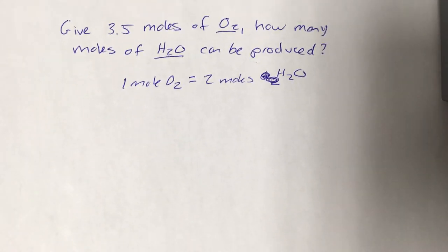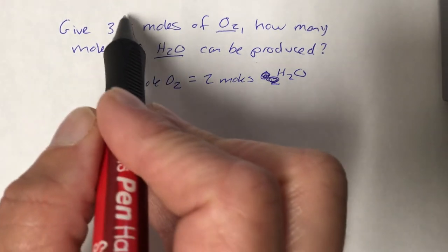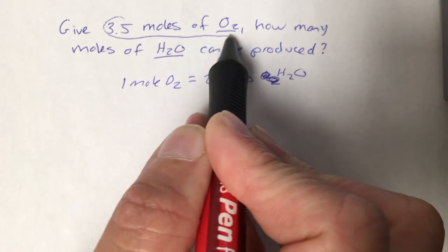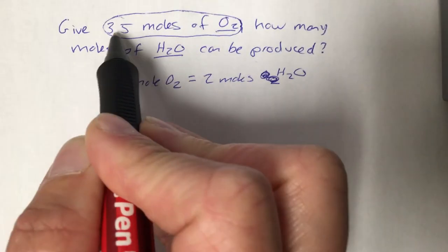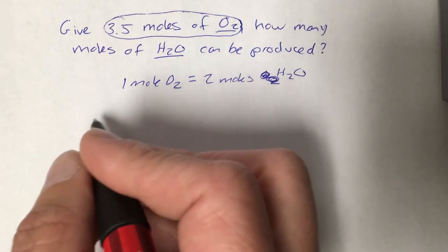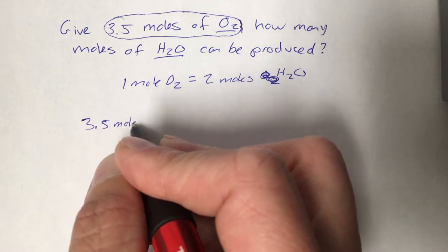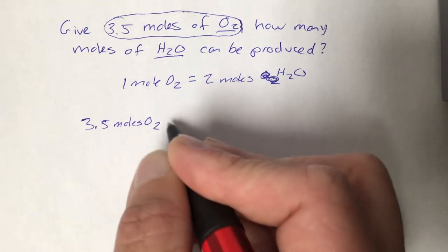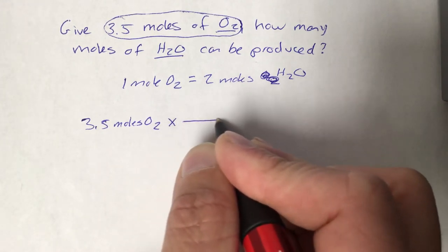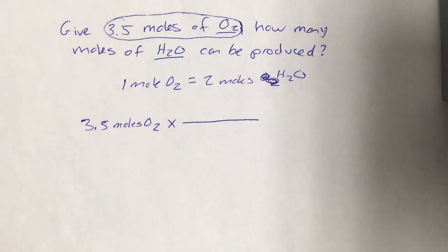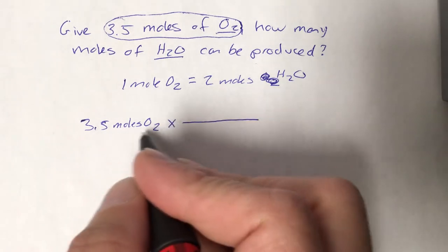H2O. With that we can do a little dimensional analysis just like we do with the other conversions. We always set up our equations starting with what we were given. We were given 3.5 moles of oxygen.